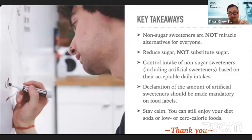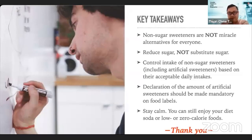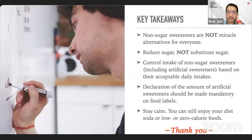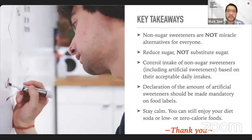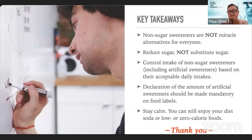People with phenylketonuria cannot break down phenylalanine properly, causing it to accumulate in the body, which can lead to health problems like mental retardation, seizures, and learning disabilities. The next question is: does aspartame bioaccumulate in the body? It shouldn't accumulate in the body. The concern is mainly about dosage — if you don't exceed the recommended dose, you should be safe, as studies have been conducted before approval to establish safe levels.